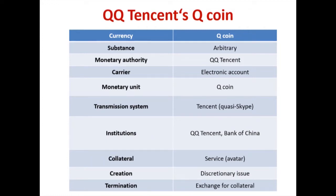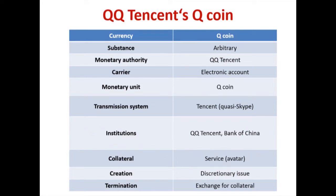To classify QQ Tencent: its substance is arbitrary, monetary authority is Tencent company, carrier is an electronic account, the monetary unit is called Q coin, transmission system is the messenger. Institutions are Tencent and the People's Bank of China — note: Bank of China is a commercial bank; I mean the People's Bank of China. Collateral is the service — you can always buy a penguin picture at a fixed price. Creation is discretionary issue; termination is exchange for collateral.